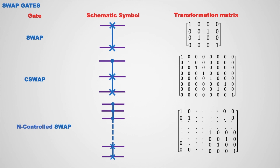Here you can see these are the different types of swap gates. This is a 2-qubit swap gate and there is no control unit. This is a 3-qubit swap gate where the number of control units is 1, and this is an n-control swap gate where n number of control bits are present and the total number of qubits is n plus 2. You can see these are the transformation matrices of the different types of swap gates.